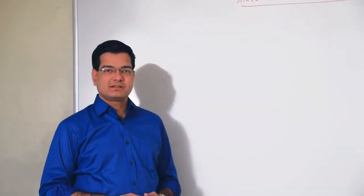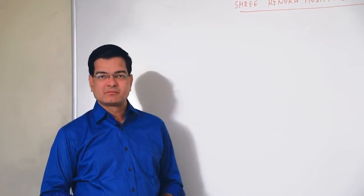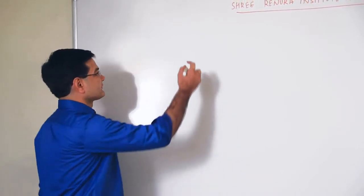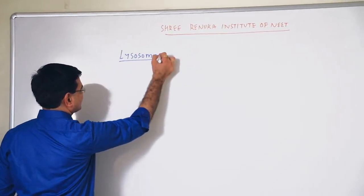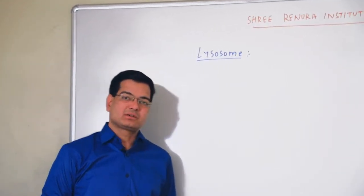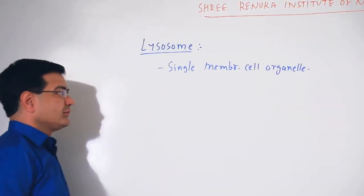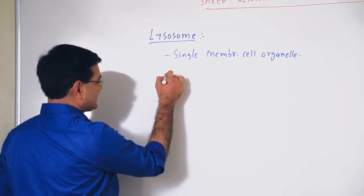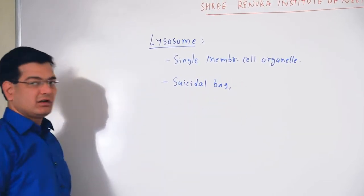Welcome all of you to the Renuka Institute. Today we talk about lysosome. Lysosome is a suicidal bag. Lysosome is a cell organelle which is found in the eukaryotic cell. This single membranous cell organelle, the lysosome, is called the suicidal bag of the cell.